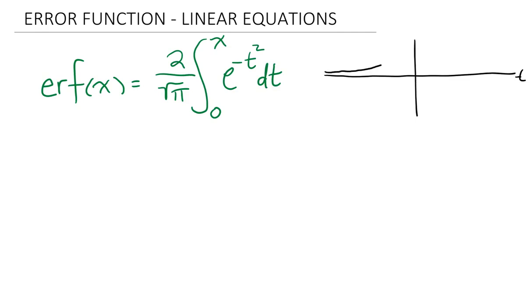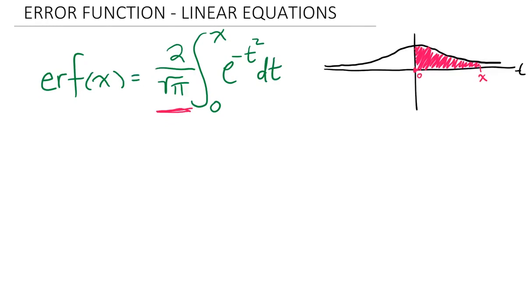It looks sort of like a bell curve. We know this is 0, and we will choose some value of x and evaluate the area underneath this curve from 0 to whatever value we choose for x. That is what the error function is evaluating — it's taking this area and multiplying it by 2 over the square root of pi.